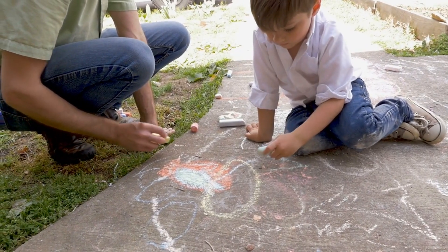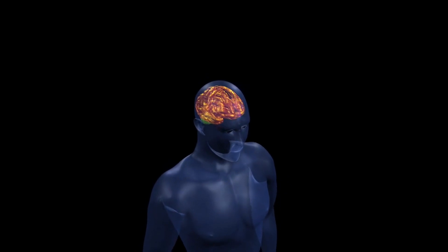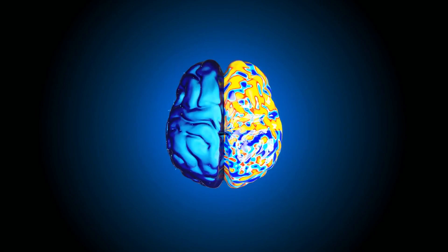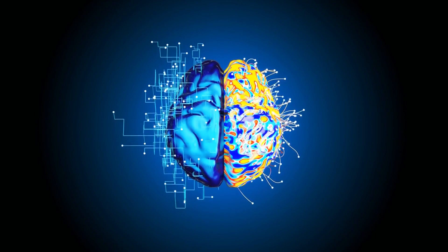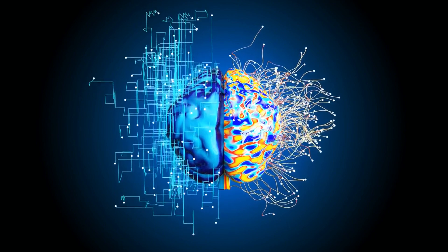Now, let's talk about handedness. We know the brain is a complex organ with different areas controlling different functions. In most right-handed individuals, the left hemisphere of the brain, which is responsible for tasks such as language processing, is dominant.